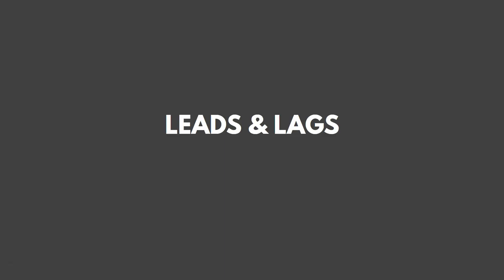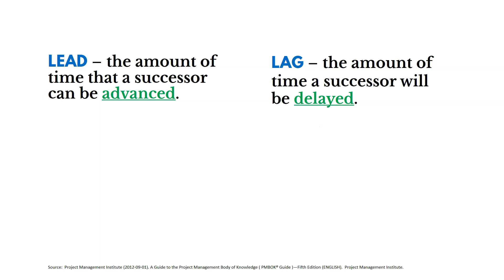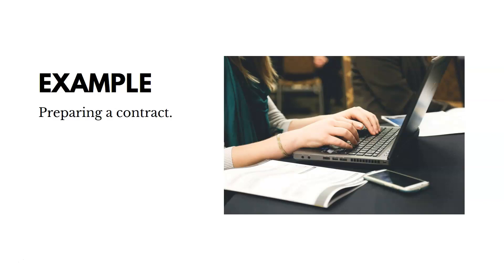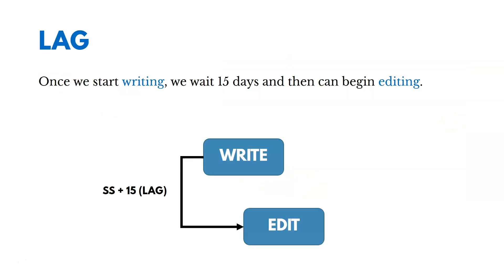Now let's talk about the concepts of leads and lags. Leads are the amount of time a successor can be advanced. A lag is the amount of time a successor will be delayed. For example, in a start-to-start relationship with a lag: once we start writing the contract, we have to wait 15 days and then we can begin editing. We have to wait to get started — that's a lag.